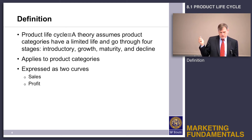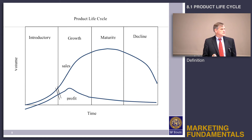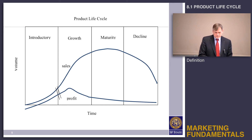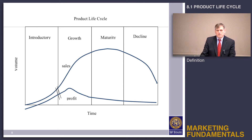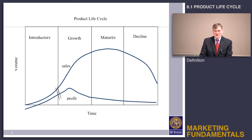The product lifecycle is basically expressed as two curves. The big, long, high curve is sales, and the second curve at the bottom is profit. You can see we start out with introductory, growth, maturity, and decline. A very important thing to understand about the product lifecycle is that profits are not directly related to sales.